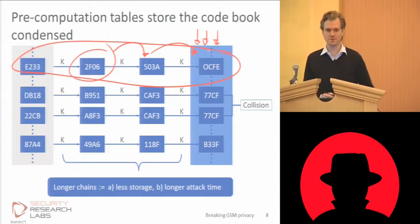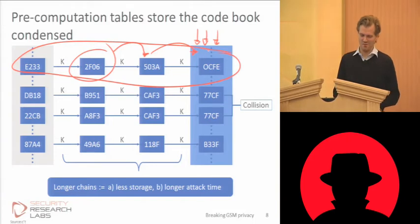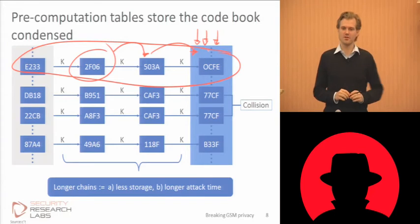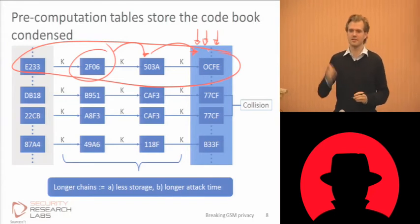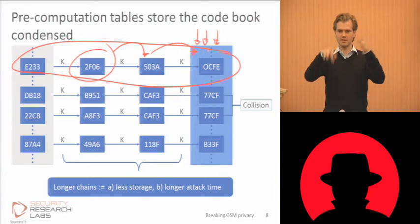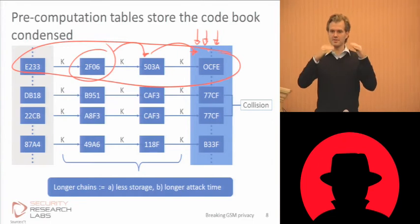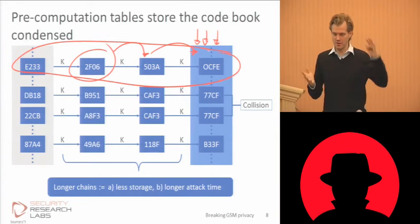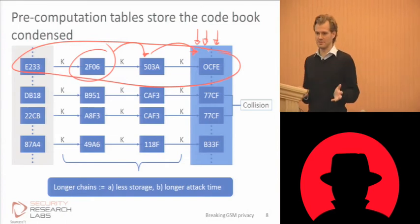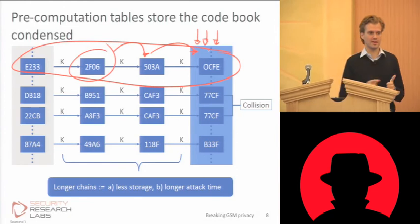Now, this straightforward approach does not work for two reasons. First, statistically speaking, you'll never cover all 2 to the 61 values in this table, because of the circle where all the values wrap around. Many of these chains will overlap in parts, and as you keep adding chains to an already large dataset, chances are you're only creating more redundancy rather than adding more values.